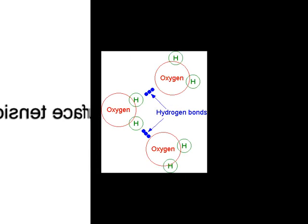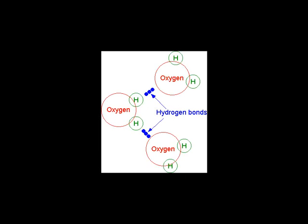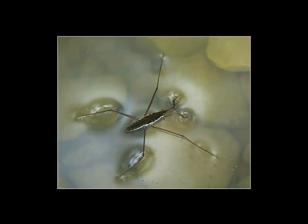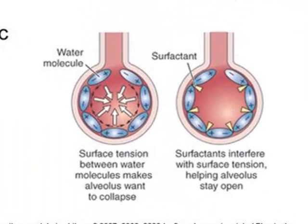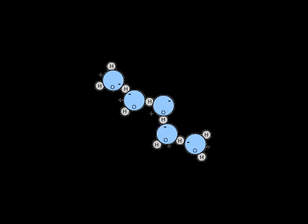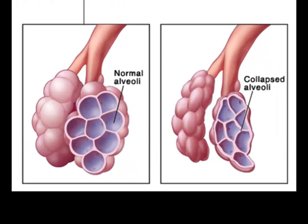The other concept to be aware of is surface tension. Hydrogen bonds hold water molecules together — the positive end of one is attracted to the negative end of another, so they stick together with a lot of force. Think of pond-skater bugs that walk on water because they're light enough not to break the surface tension. Surface tension is important in the lungs because each alveolus is lined with a layer of water molecules. Since water molecules are polar, they attract each other, and the alveoli, under normal circumstances, want to collapse on each other because of this attraction.